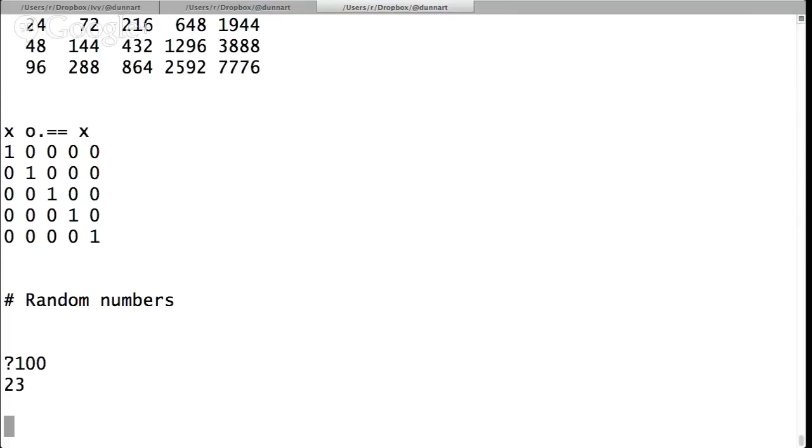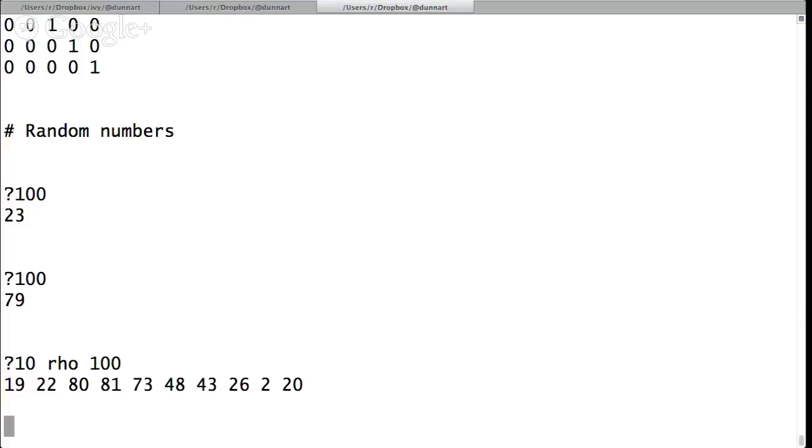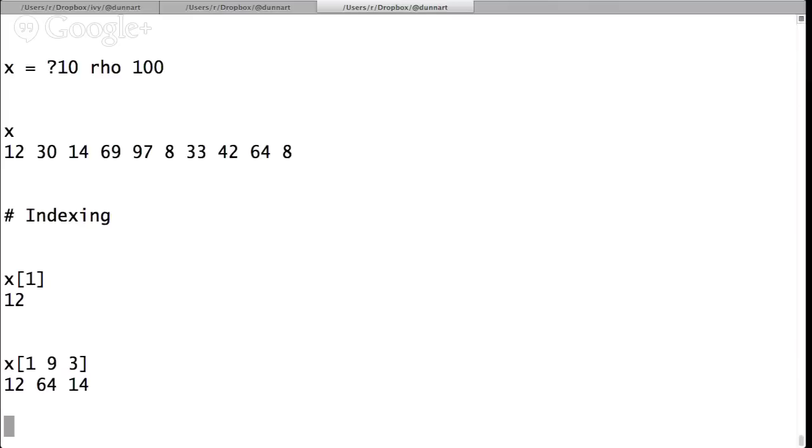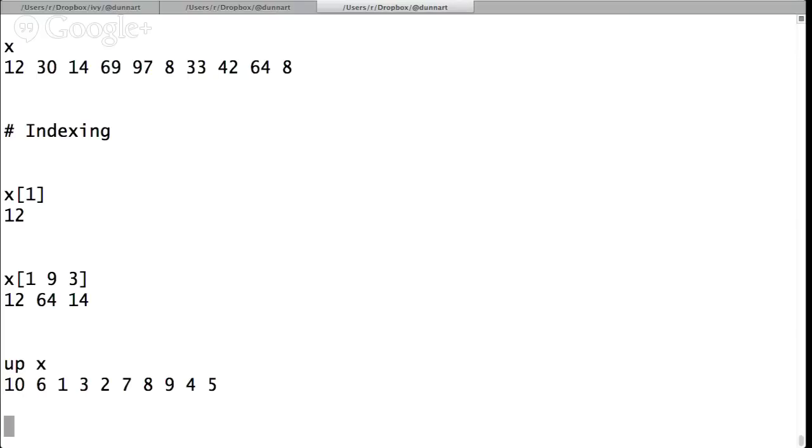And then just a couple of more fun things. You can say, what's a random number between one and 100? That's the question operator. That's 23. There's another one. So let's make 100 random numbers between, sorry, 10 random numbers between one and 100. Actually, let's remember a set of those. So there's 10 random numbers. So now we have an interesting matrix that's not just sequential. We can index into it. Notice you can index by a vector, taking the first, the ninth, and third element of the vector.